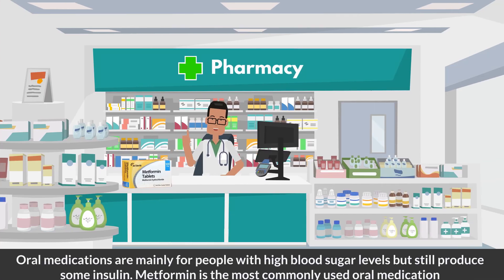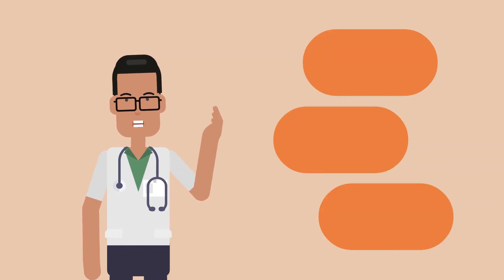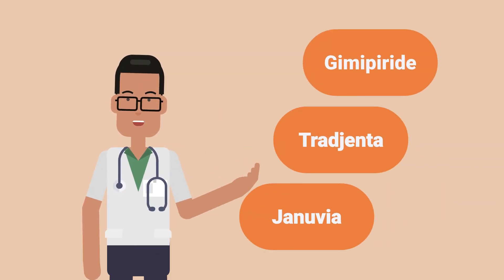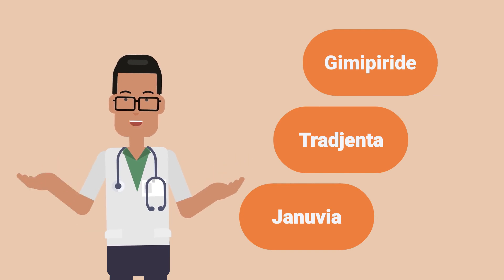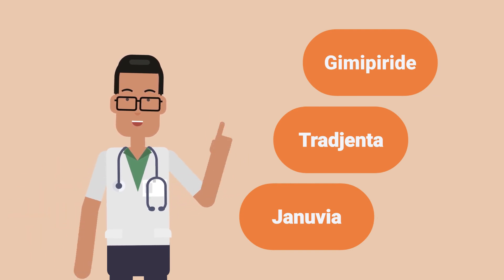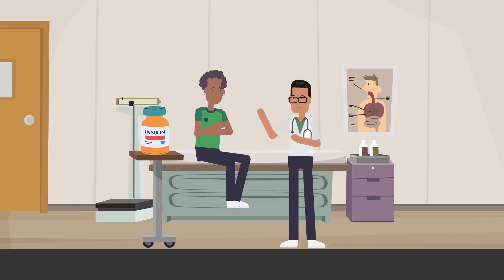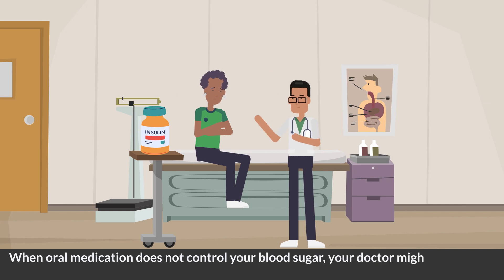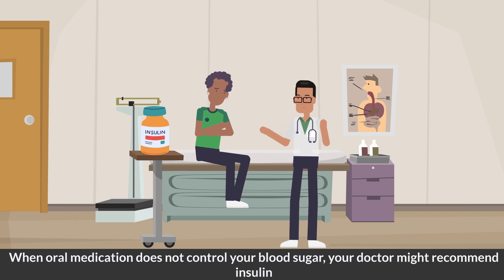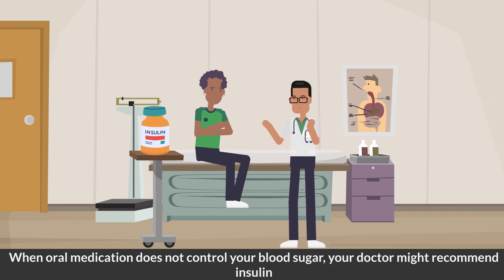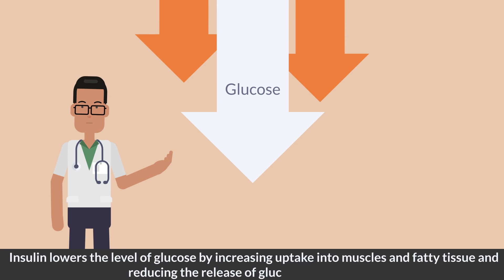Oral medications are for those who still produce some insulin. Metformin is the most commonly used oral medication. Other common options include glimepiride, Tradjenta, or Januvia. When oral medication does not control your blood sugar, your doctor might recommend insulin.